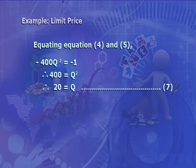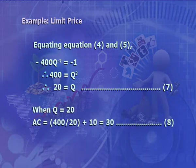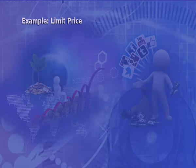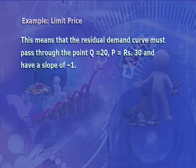Setting the slope of the residual demand curve equal to the slope of the AC curve: −400Q^(−2) = −1, therefore 400 = Q^2, therefore Q = 20. When Q = 20, average cost = 400/20 + 10 = 30 (equation 8). This means the residual demand curve must pass through the point Q = 20, P = 30, and have a slope of −1.